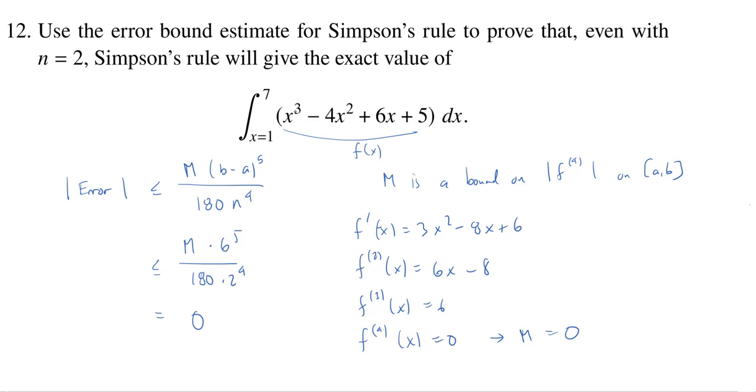Now, there's nothing very special about this particular cubic. If we chose any cubic polynomial or even a quadratic or a linear or a constant, the exact same reasoning would apply. When we take that fourth derivative, our upper bound on the fourth derivative will be 0. And hence, the error is going to be bounded by 0. There will be no error in Simpson's rule for computing a cubic. Just remarkable.